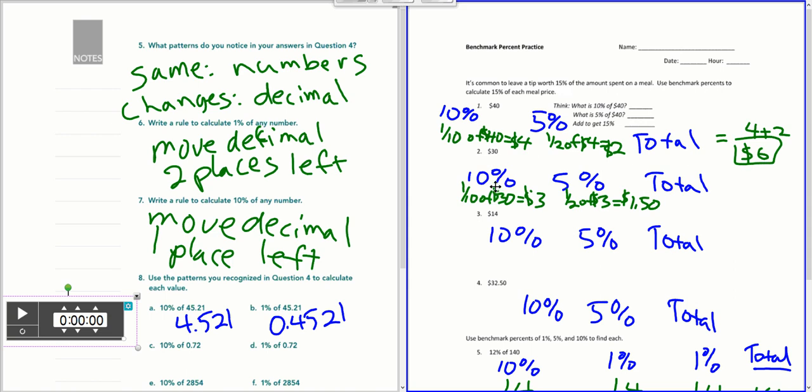Same thing here on problem 2. One tenth of 30 is $3. Half of 3 is $1.50. So put those together, 3 and $1.50, what would it be? I'll leave you to find that.